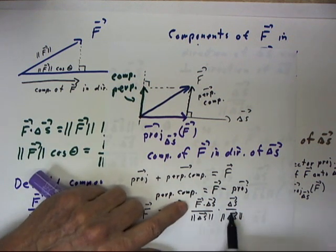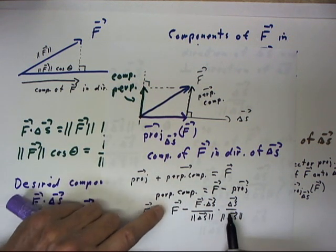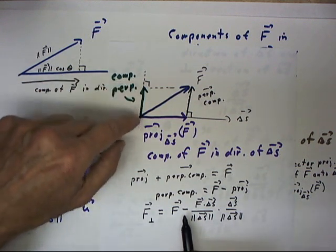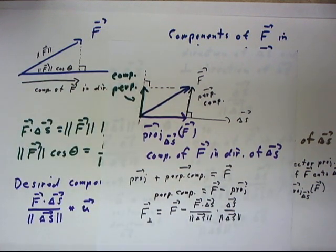So we have the parallel component, component in the direction of delta s, and just by subtracting that from our f vector, we get the perpendicular component.